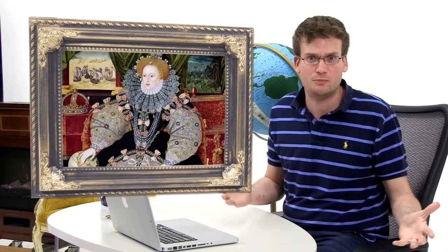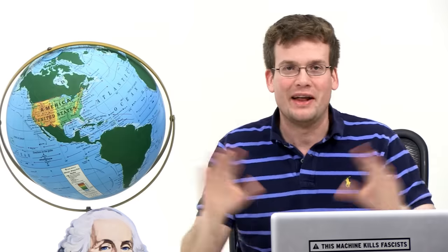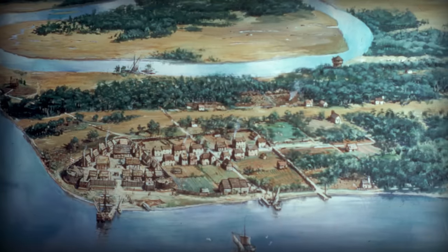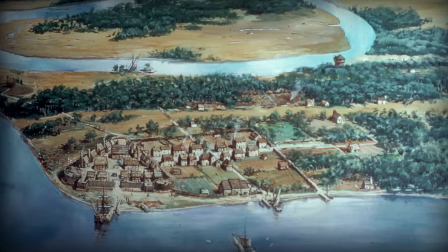Off topic, but how weird is it that the first permanent English colony in the Americas was named not for Queen Elizabeth's epicness, but for her supposed chastity. Right, anyway, those first English settlers weren't looking for religious freedom, they wanted to get rich. So the first successful English colony in America was founded at Jamestown, Virginia in 1607.